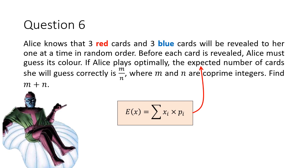So assuming that m and n are coprime integers, find the value of m plus n. You can pause the video here and give this question a good try before having a look at the answer.